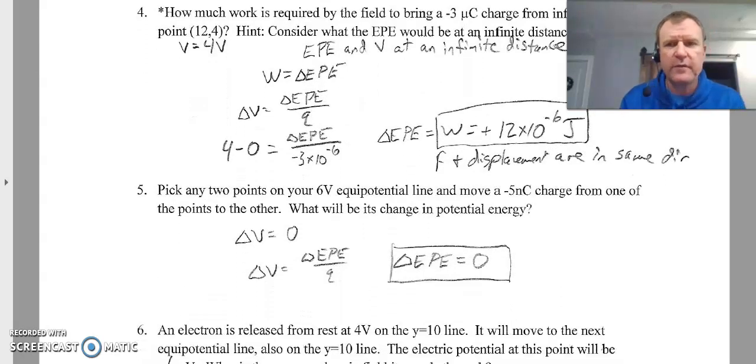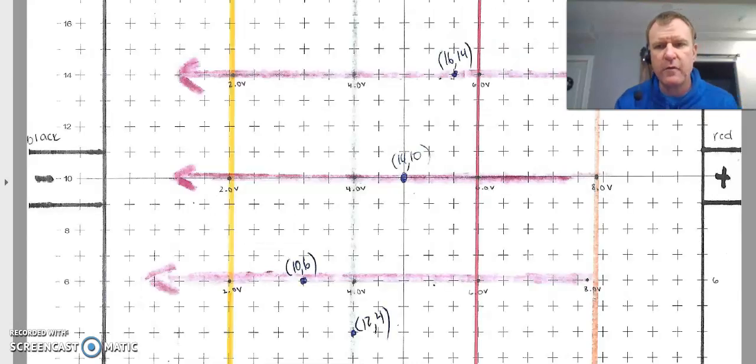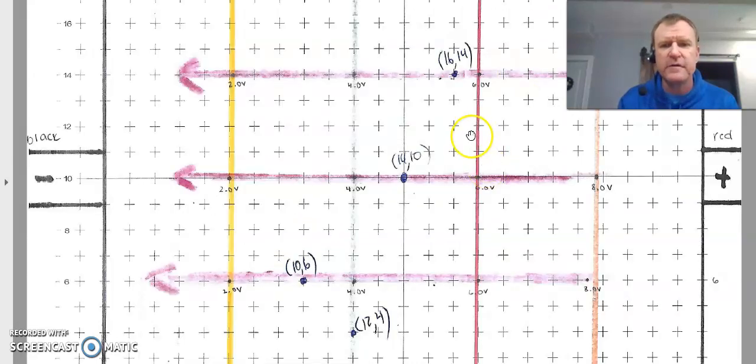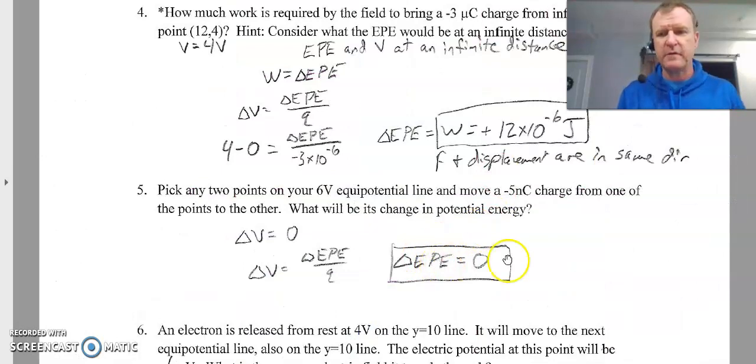Next question. Pick any two points on your 6 volt line. So here's their 6 volt line. I'm going to pick this point and I'm going to pick this point right there. Question is, you're going to move negative 5 nanocoulomb charge from one of those points to the other. What will its change in potential energy be? Well, you're staying on the 6 volt line. So your potential difference is 0. You're not changing in electric potential. You're not gaining energy. You're not losing energy. In order for a charge to gain or lose energy, it either has to go towards the negative side or towards the positive side. If it's not going towards either, it's not changing its energy. So that's why the change in potential energy is 0 for that one.